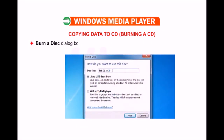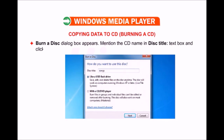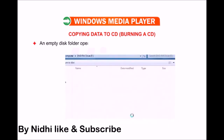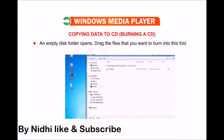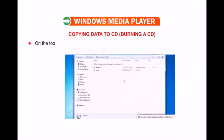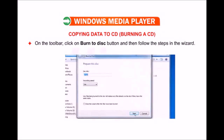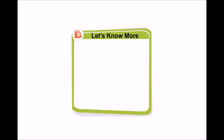The Burn a Disk dialog box appears. Enter the CD name in the title text box and click Next. An empty disk folder opens. Drag the files that you want to burn into this folder. On the toolbar, click the Burn to Disk button and then follow the steps in the wizard.